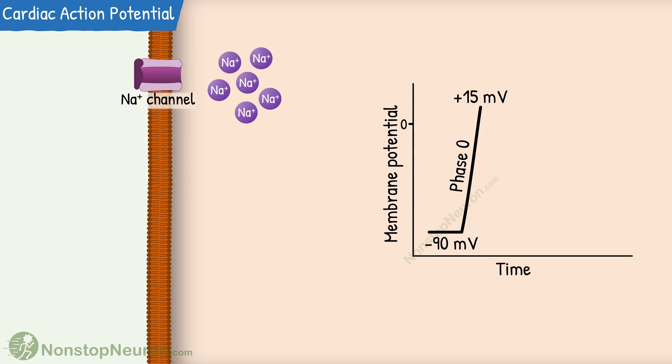Next the fast sodium channels close. This prevents the rapid influx of sodium. Also, a small quantity of potassium leaks out through potassium channels. This leads to a little bit of repolarization. This is called phase 1 or initial repolarization.